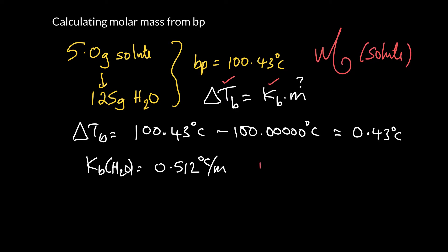So we rearrange the equation. So molal concentration is the increase in boiling point over Kb. We've solved for the increase in boiling point. It is 0.43 degrees. And the boiling point constant for water is 0.512 degrees C per molal. And when we put all that together we get the concentration of 0.840.